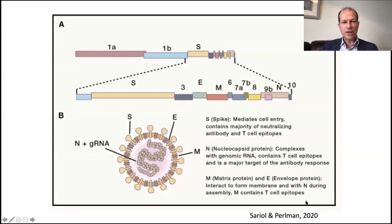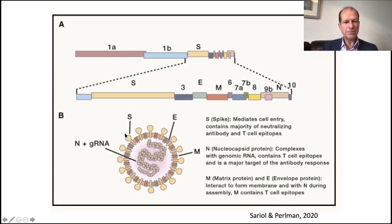This shows an outline of the virus structure. At the bottom in the cartoon, you can see the four major proteins in the virus: nucleocapsid, spike, envelope, and membrane. I want to focus today on the spike protein, which is the target for most current vaccine regimens.